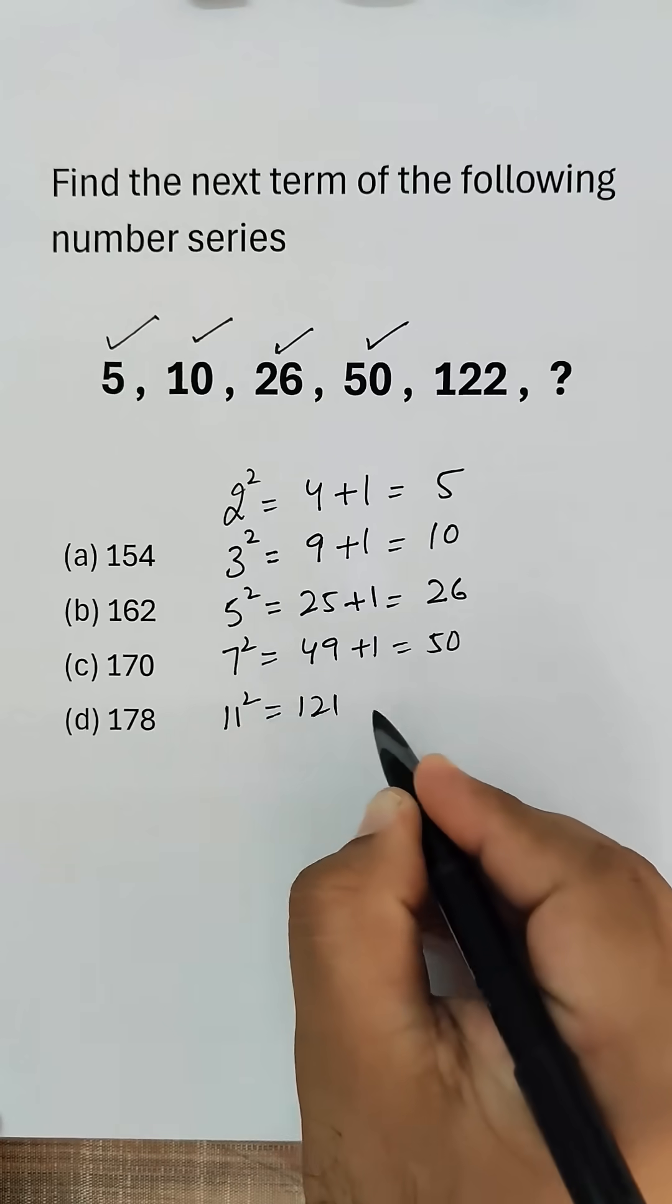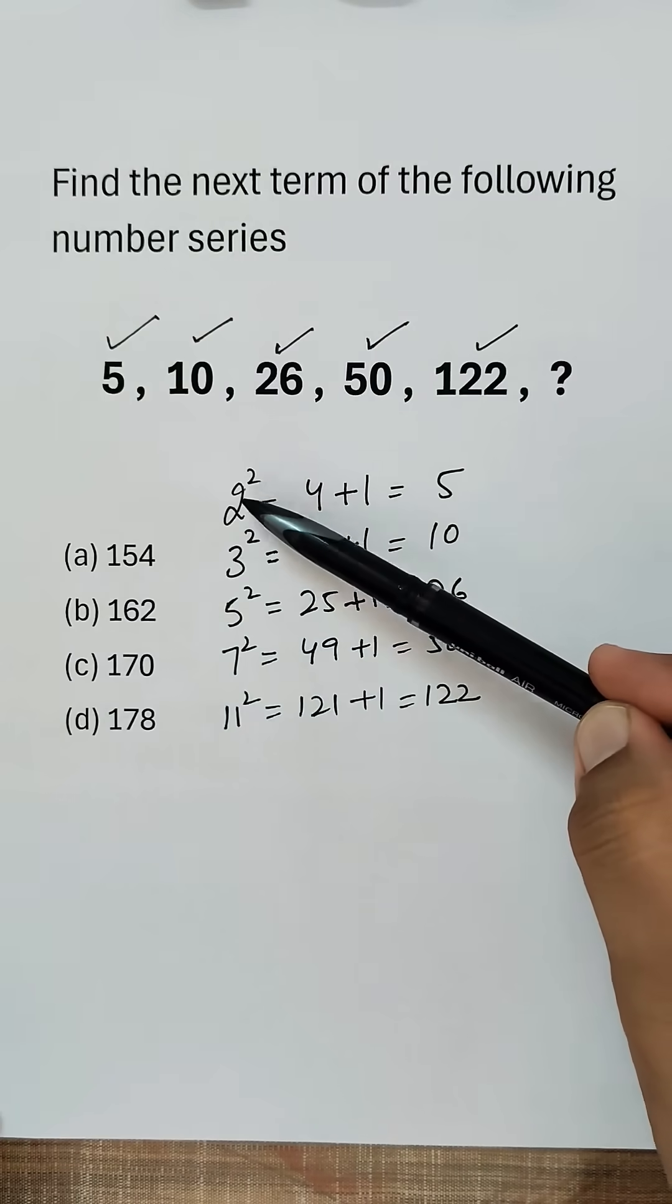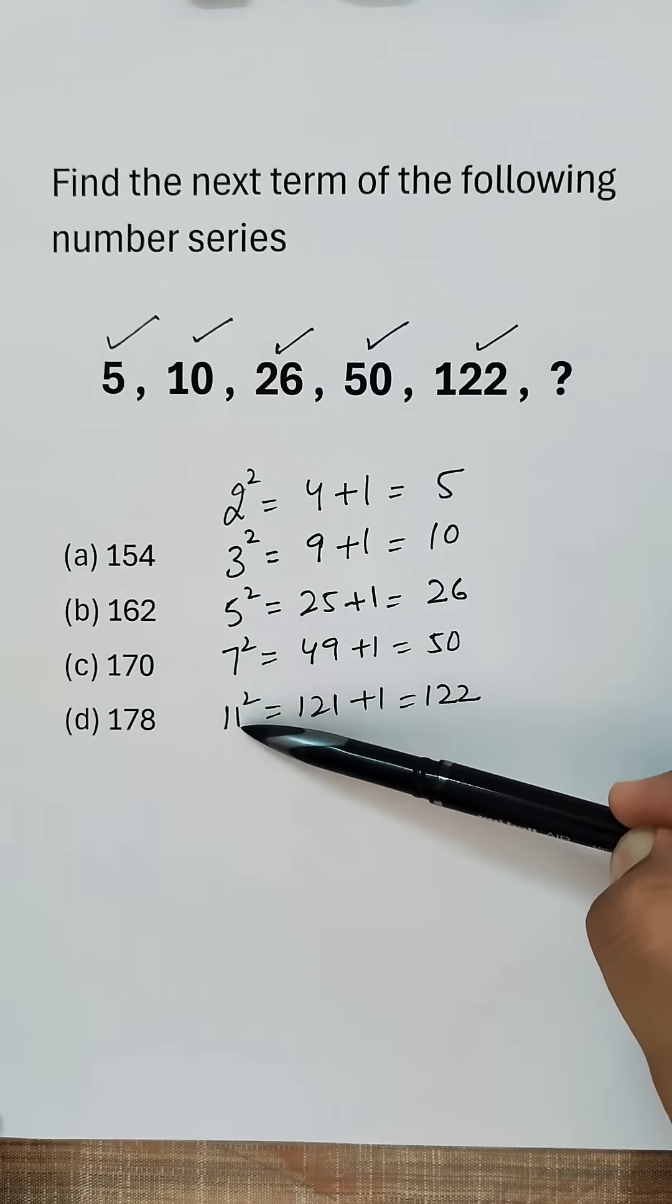11 squared is 121, if we add 1 we get 122. Now we notice we have 2, 3, 5, 7, 11. These are consecutive prime numbers.